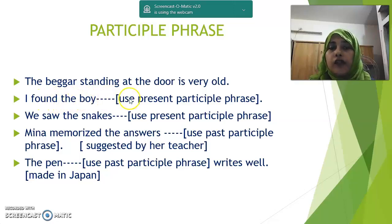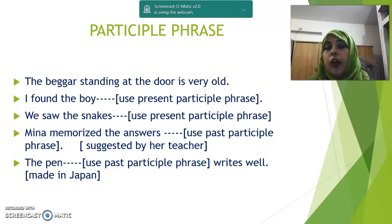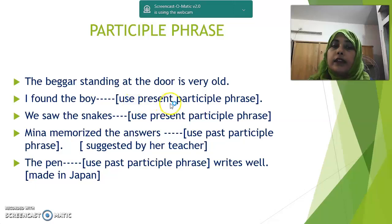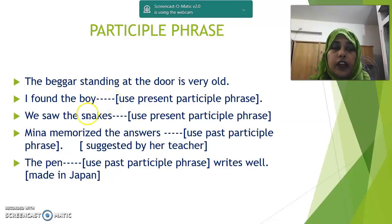Next: 'I found the boy — dash.' Use present participle. When we add -ing to the base form of a verb and it functions as both a verb and an adjective, it is called a present participle. When the phrase begins with a present participle, it is a present participle phrase. Examples: 'I found the boy playing outside,' 'I found the boy walking there,' 'I found the boy swimming in the pond.' Next: 'We saw the snakes — swimming in the pond' or 'swimming in the sea.'